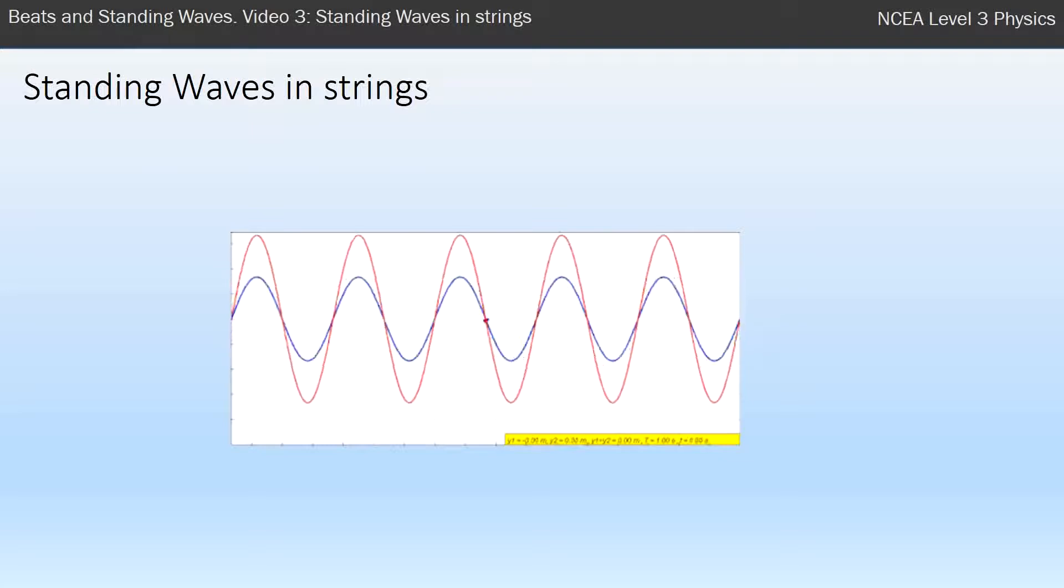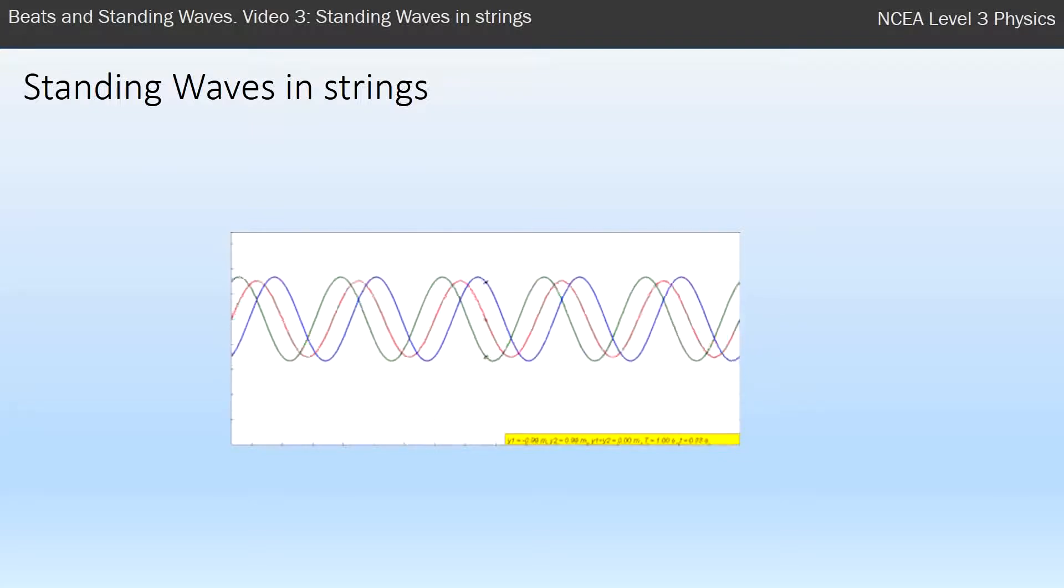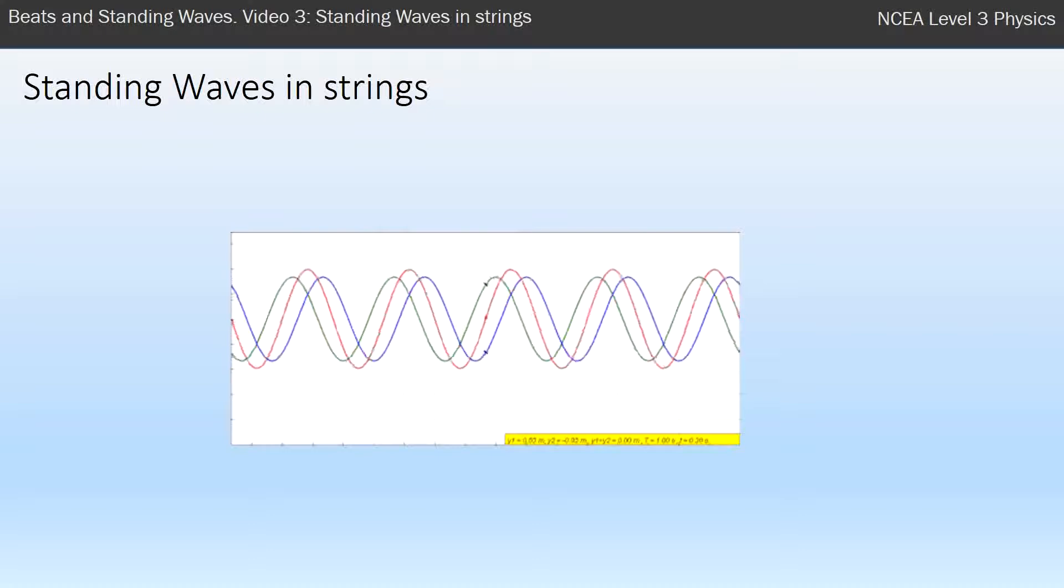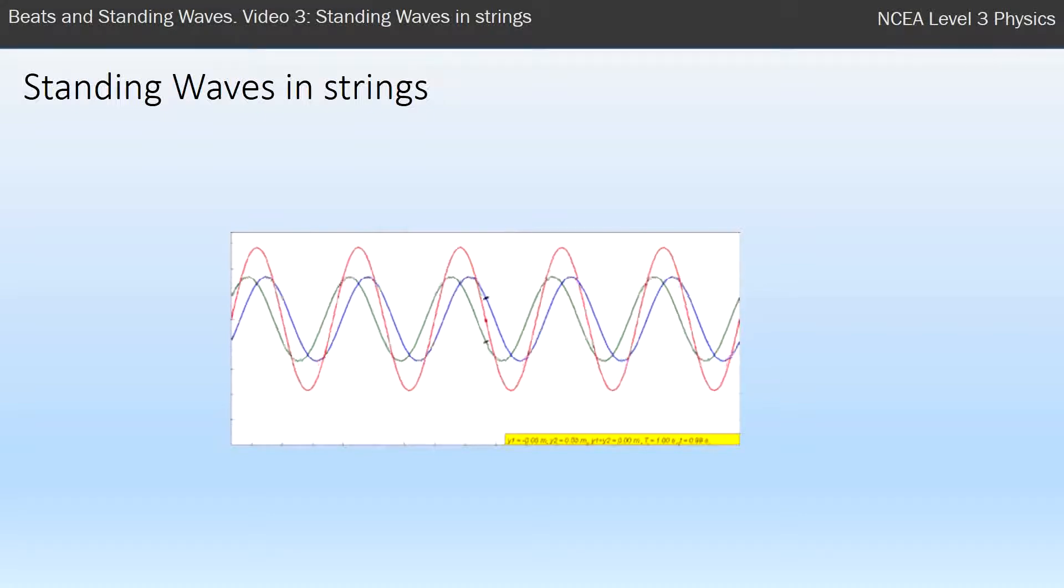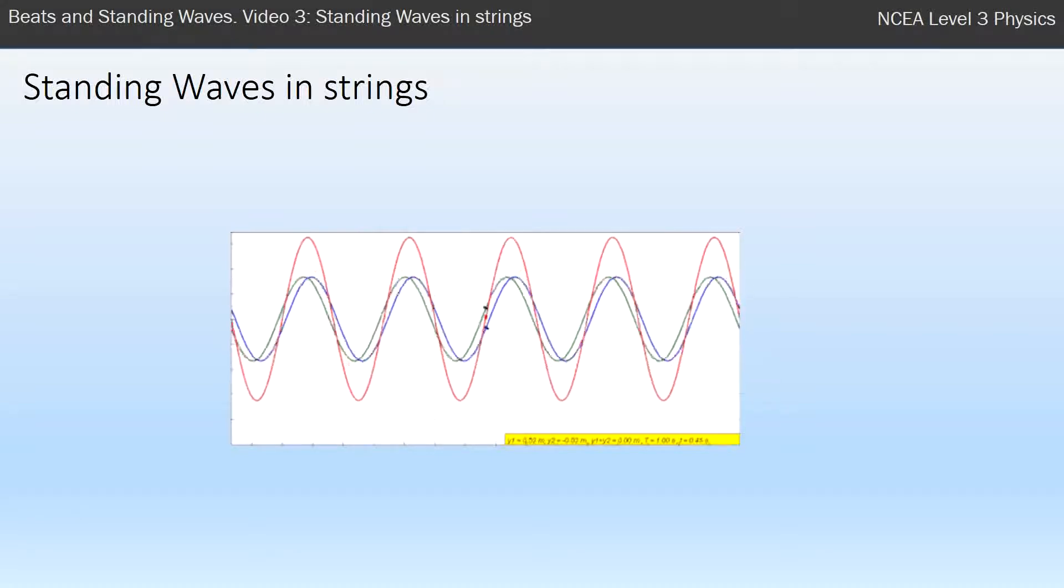If you look very carefully, you can see the green moves to the right, the blue moves to the left, but when you add them together the red just looks like it's growing but not actually moving—it's just standing in place, and that's the definition of a standing wave.